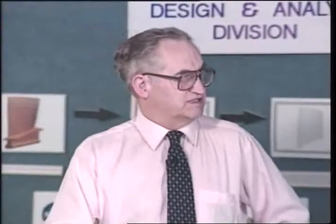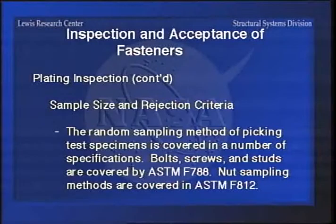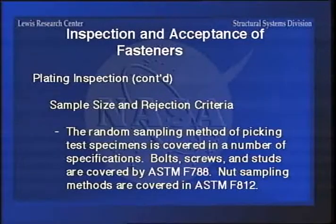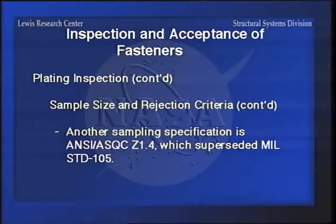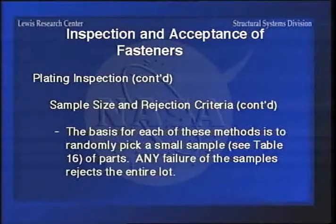The sample size and rejection criteria - normally you pick a bunch of random samples out of a bin and test them. ASTM F788 has a table that gives you the number of samples you should take for a given production lot. Another one is given in ANSI/ASQC Z1.4, which superseded MIL-STD-105. Then we have ANSI spec B18.18.1 that gives some sampling techniques. The basis of all of these is to randomly pick a small sample, and any failure of the samples rejects the whole lot.